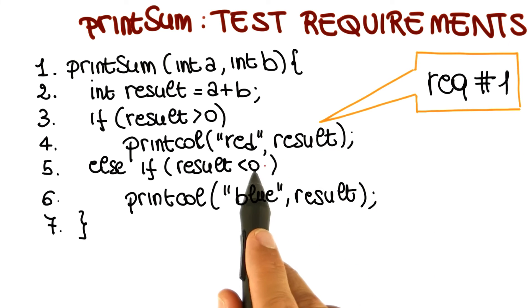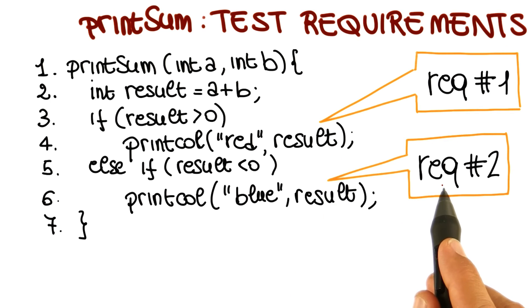So we have a first test requirement here, which is the execution of this particular statement, and a second requirement here. And this one corresponds to the execution of this other statement. So for this example, there are two things that we need to do in order to satisfy our coverage requirements.